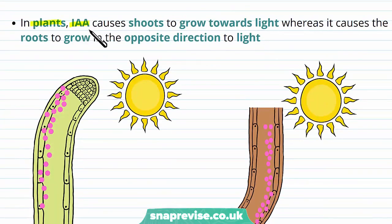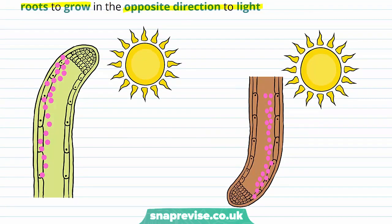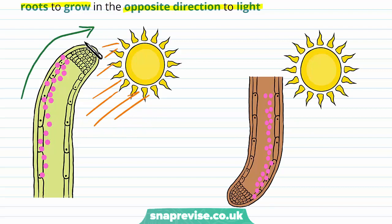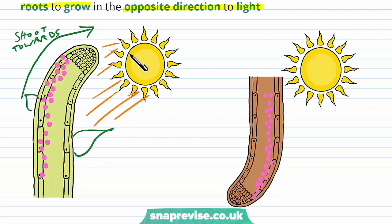In plants, the indole acetic acid, which is a type of auxin, causes the shoots to grow towards the light, but it causes the roots to grow in the opposite direction to the light. If you put most plants in a source of sunlight, the sun will come from a particular direction, and the shoots will grow towards the light — exposing the leaves as much as possible to sunlight for photosynthesis.